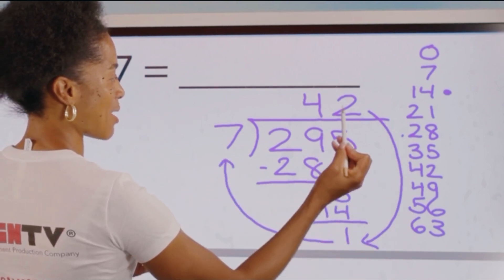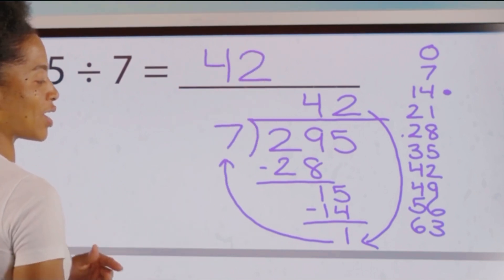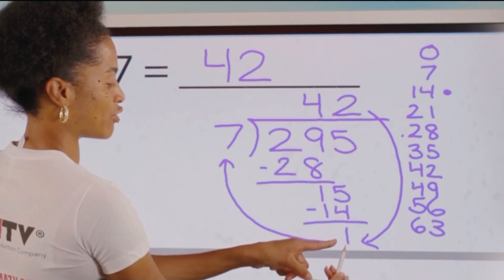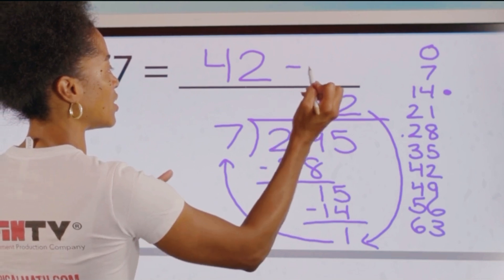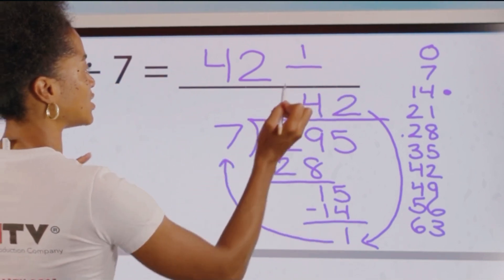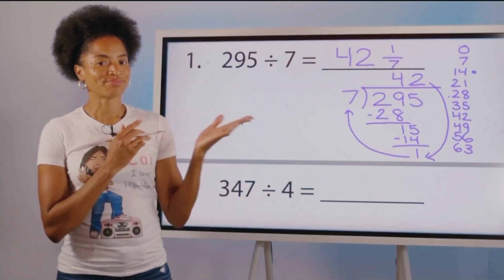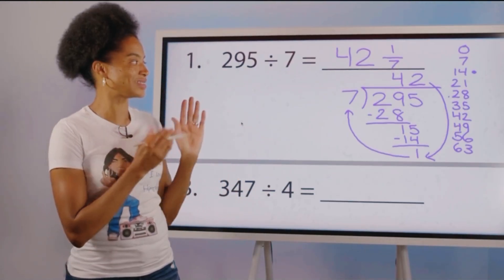Start at the top with 42, go around the clock. If you have a remainder, the remainder will be the numerator in your fraction and your divisor is your denominator.